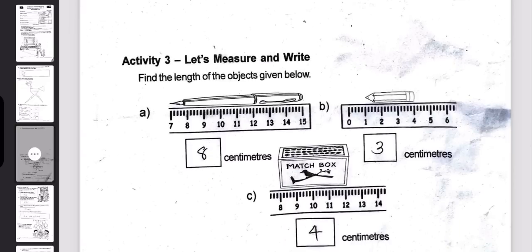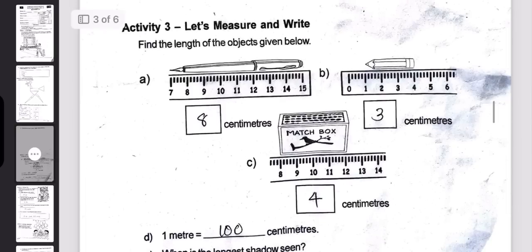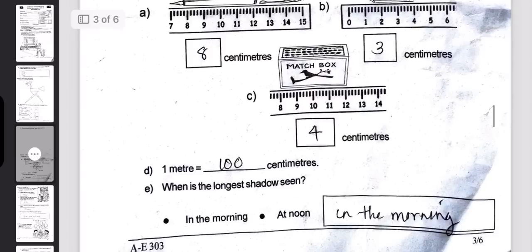Let's measure and write. Find the length of the objects given below. The length of each object is measured using a scale. The measurements are: 8 cm, 3 cm, 4 cm, and 100 cm.